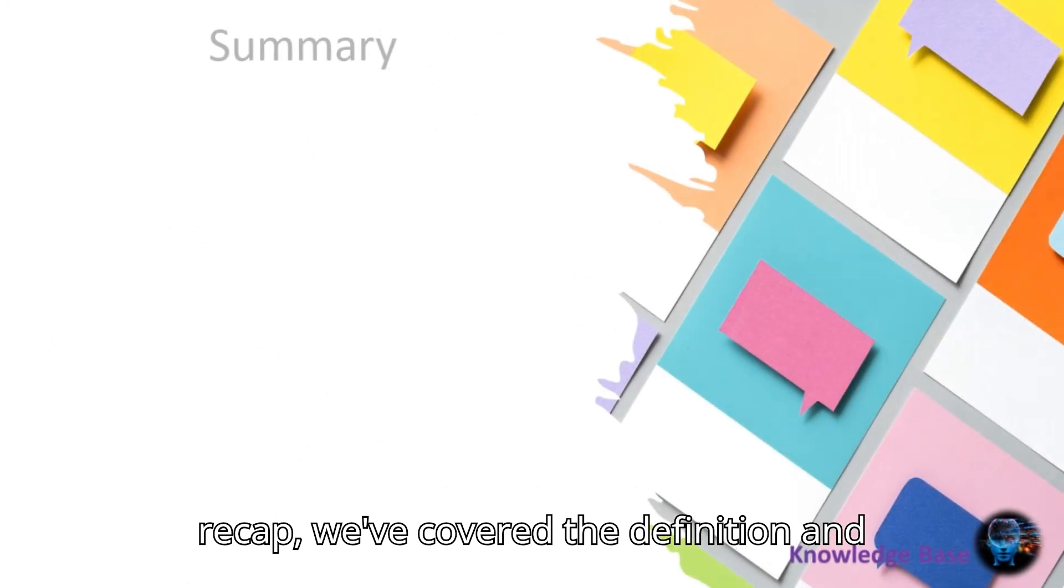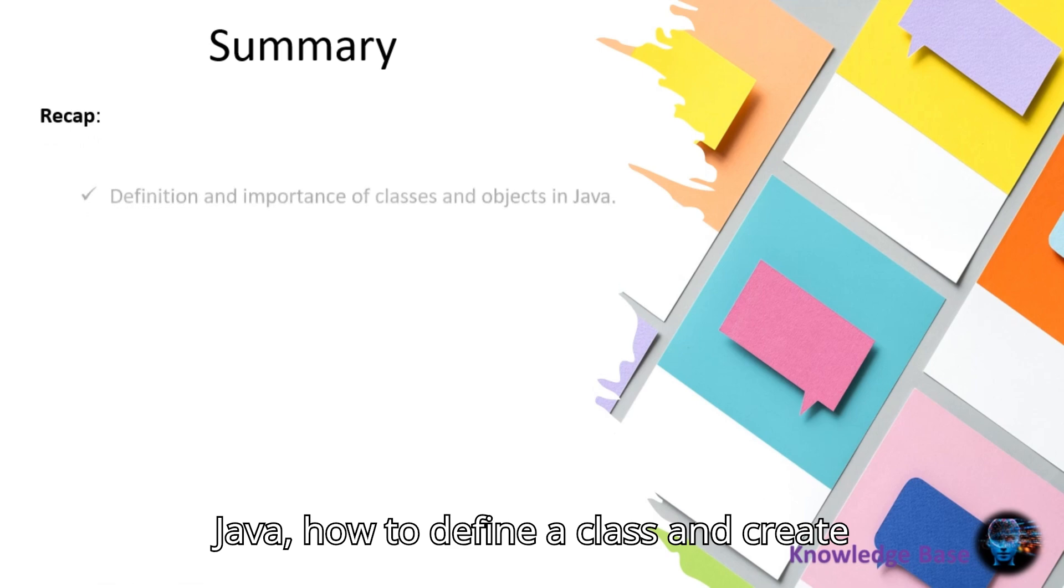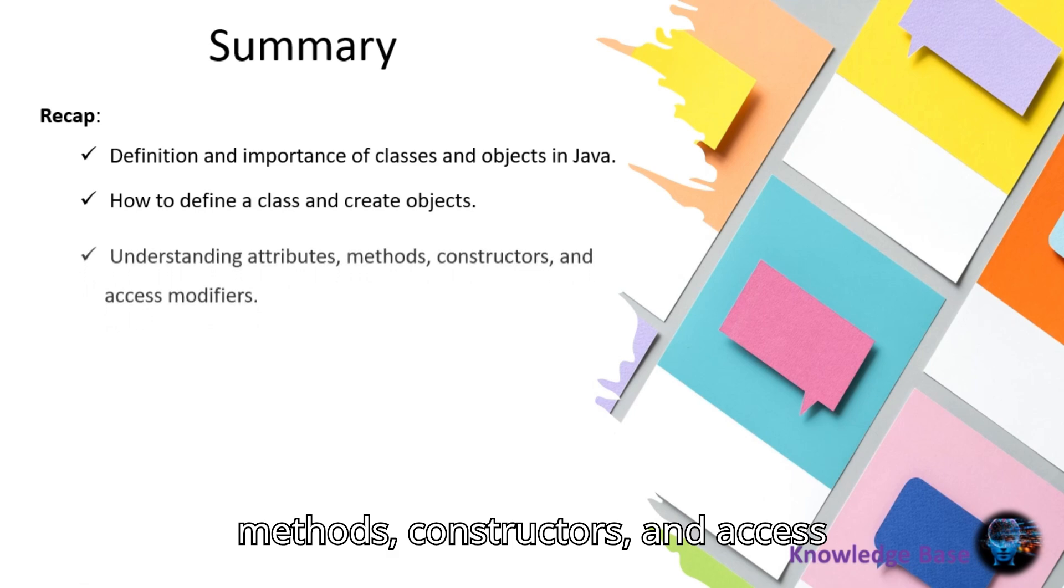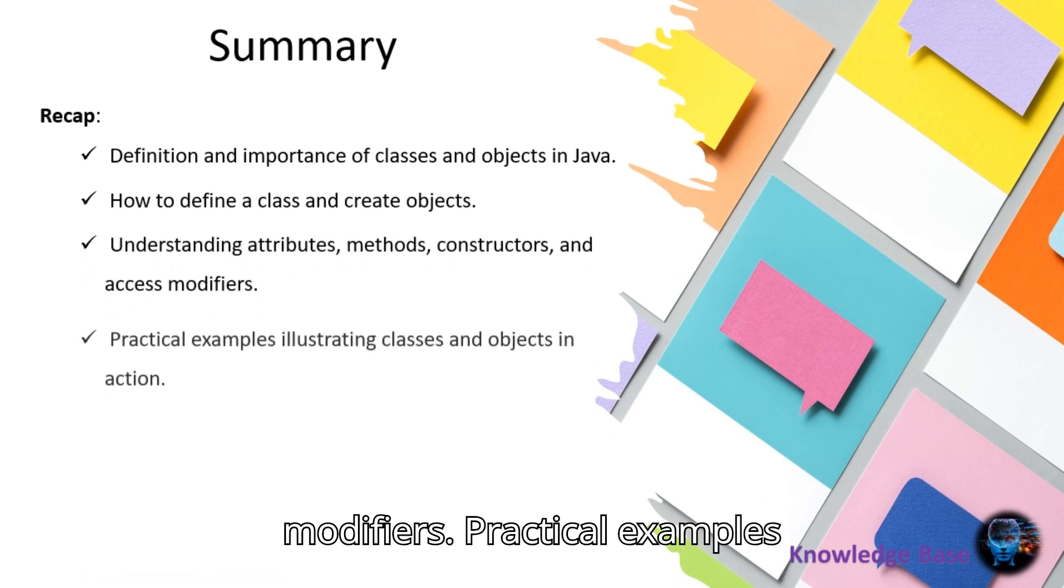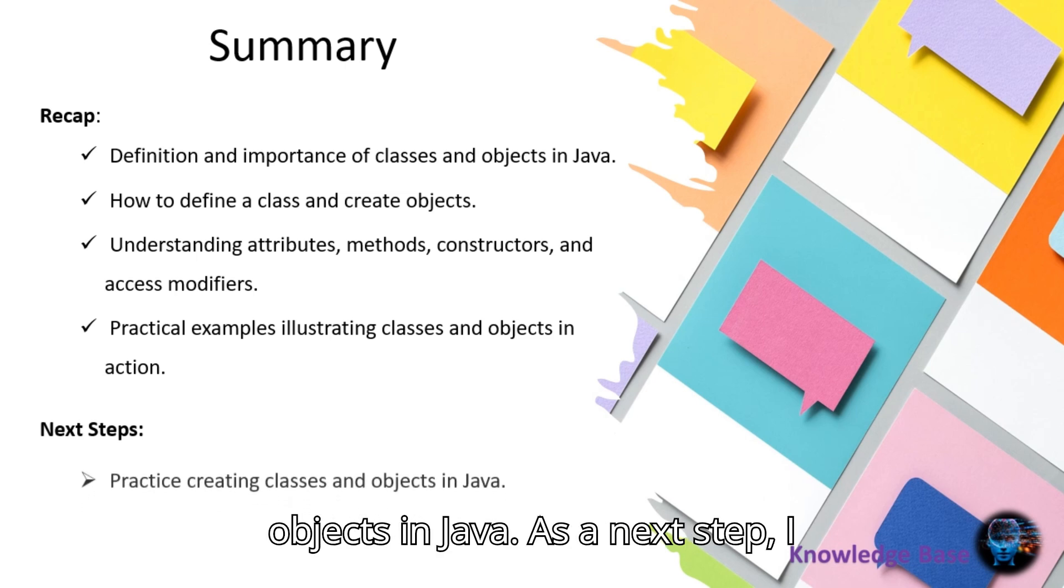To recap, we've covered: the definition and importance of classes and objects in Java, how to define a class and create objects, the roles of attributes, methods, constructors, and access modifiers, and practical examples illustrating how to use classes and objects in Java.